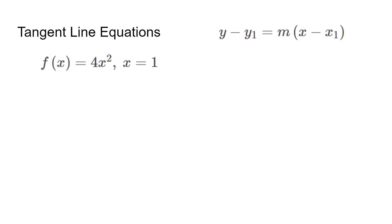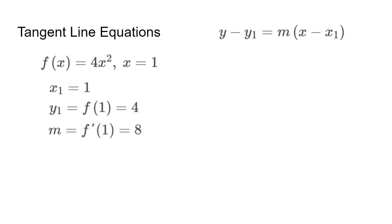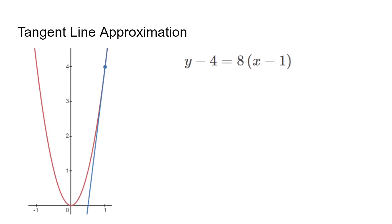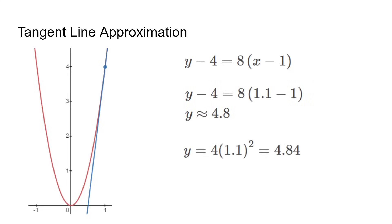Next is tangent line equations. We use the point-slope formula y - y₁ = m(x - x₁). Given a function f and either a value x or a point, we can plug into the formula. When f(x) = 4x² and x equals 1, x₁ is 1, y₁ is 4 times 1 squared, so 4, and m is the same as f'(x), which is 8x, so 8. The tangent line equation would be y - 4 = 8(x - 1). We also use linear approximation to approximate nearby values such as f(1.1). We plug it into the equation and get an approximation of about 4.8, which is really close to the exact value of 4.84.